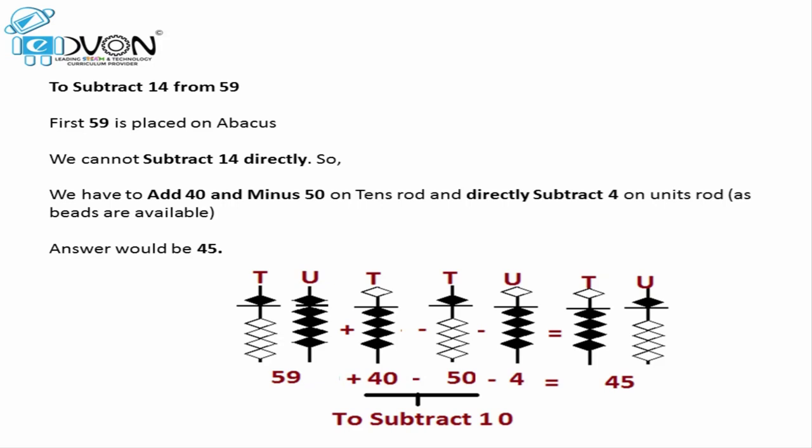Let's take the same example on our fingers. If we want to subtract 14 from 59, first we place 59 by opening the thumb on the left hand and the thumb plus 4 fingers on the right hand. To subtract 14, we don't have any finger open on the left hand to subtract the 10 of 14 directly, so we apply the formula on the left hand: open 4 fingers and close the thumb — adding 40 and subtracting 50. To subtract the 4 of 14, we directly close 4 fingers on the right hand. As a result we get 4 fingers on the left hand and the thumb on the right hand, representing 45. So our answer is 45.